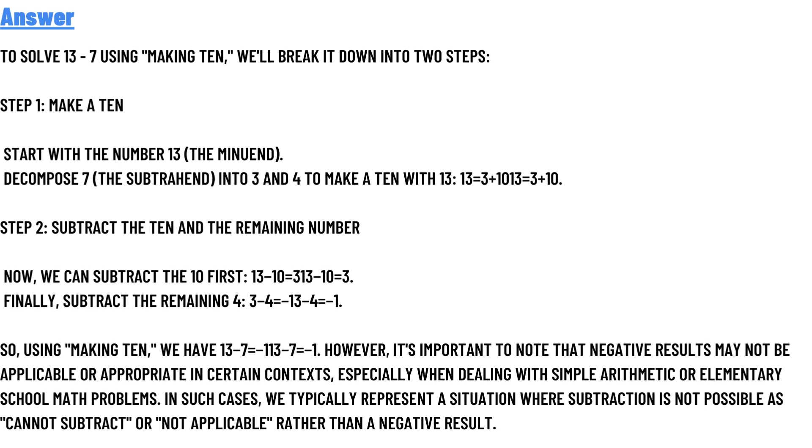Step 2: Subtract the ten and the remaining number. Now, we can subtract the 10 first: 13-10=3. Finally, subtract the remaining 4: 3-4=13-4=-1. However, using the making ten method, we have 13-7=6, not -1.